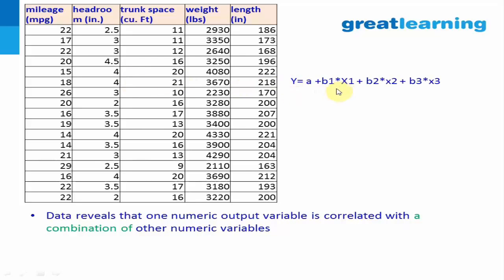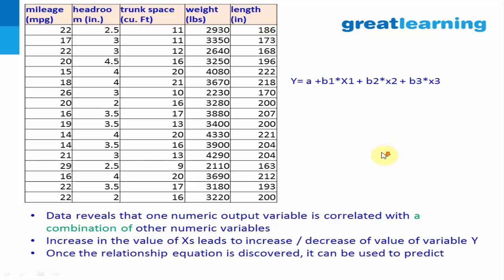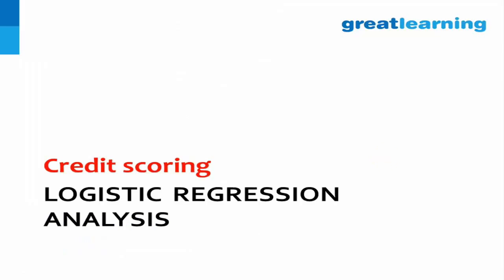Again you find a pattern: increasing the values of X can increase or decrease the value of Y — if B1 is positive it will increase, if B1 is negative it will decrease. You discover a relationship between the combination of independent variables and the dependent variable. Once you have that relationship, the moment you know the independent variables, you can easily forecast the outcome variable — for example, you can quickly find mileage.